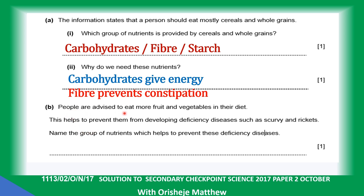People are advised to eat more fruit and vegetables in their diet. This helps to prevent them from developing deficiency diseases such as scurvy and rickets. Rickets is caused by lack of vitamin D; scurvy by lack of vitamin C. Name the group of nutrients which helps to prevent this deficiency disease. Vitamins.